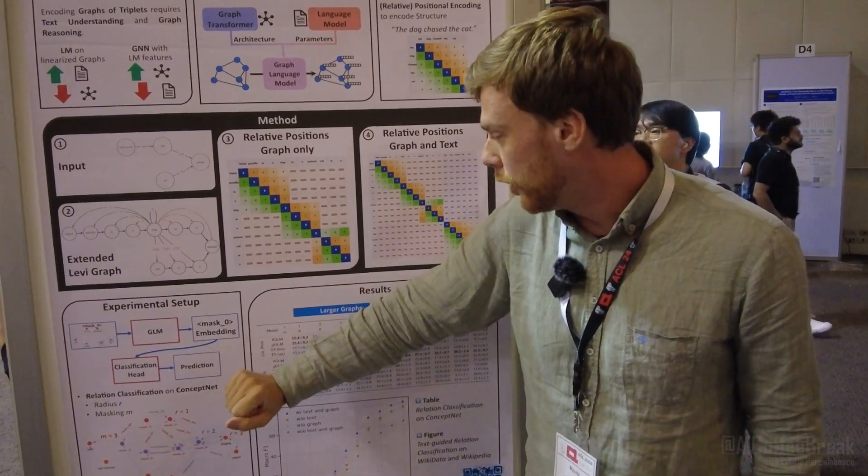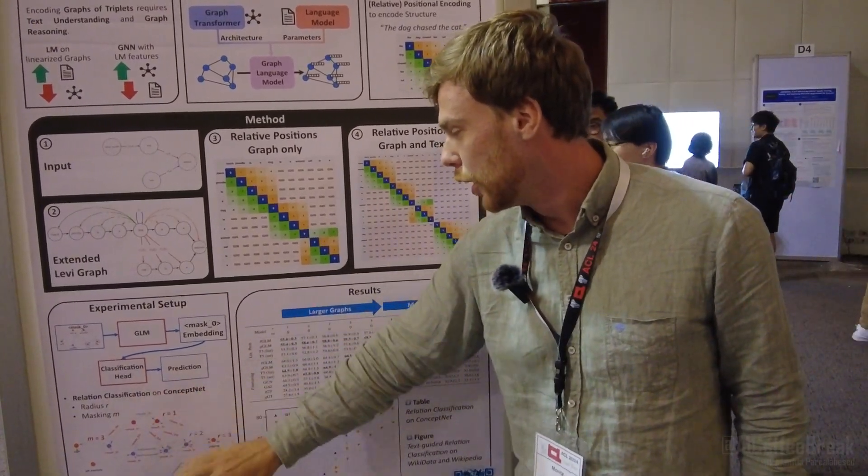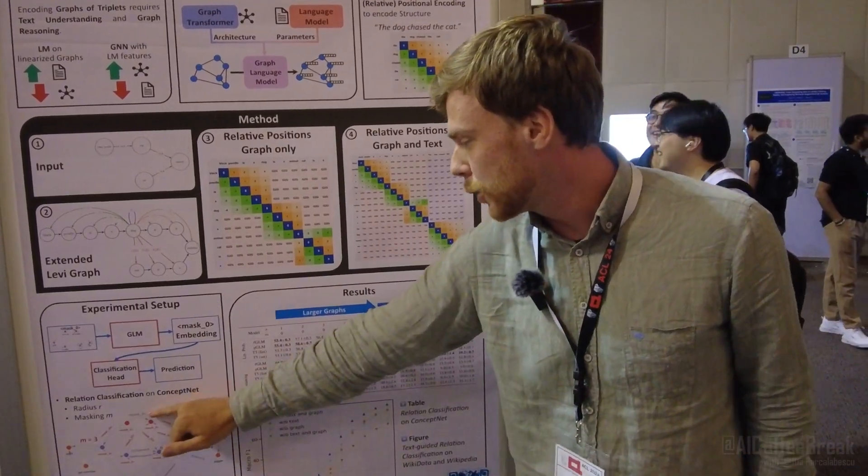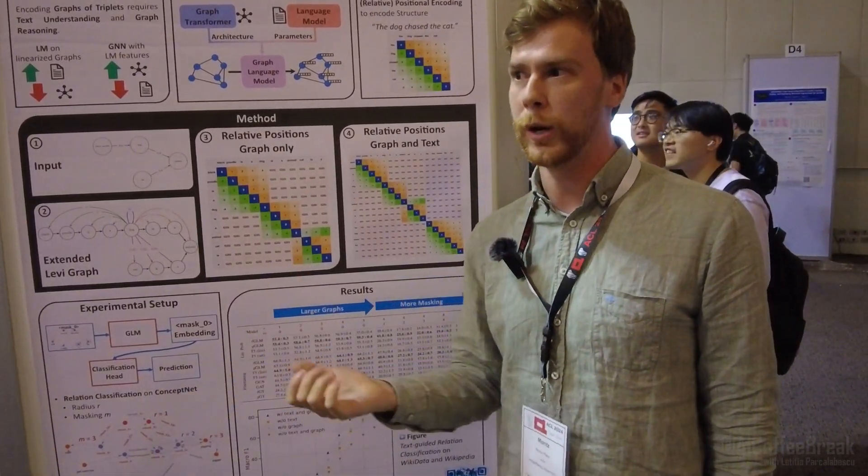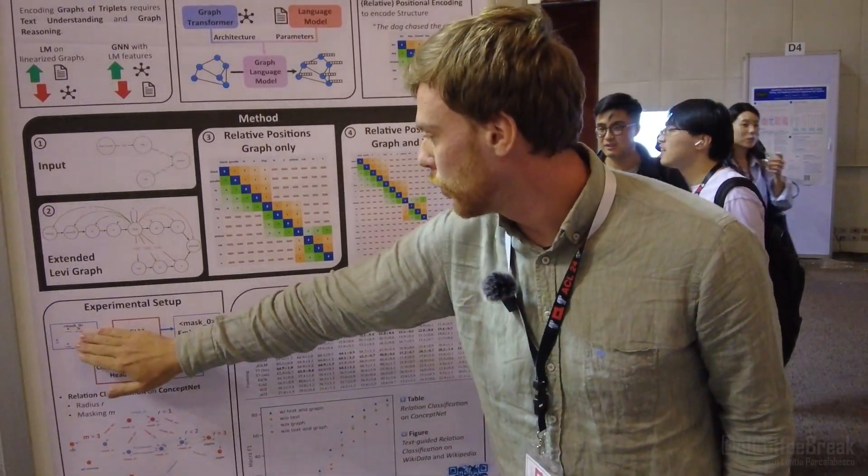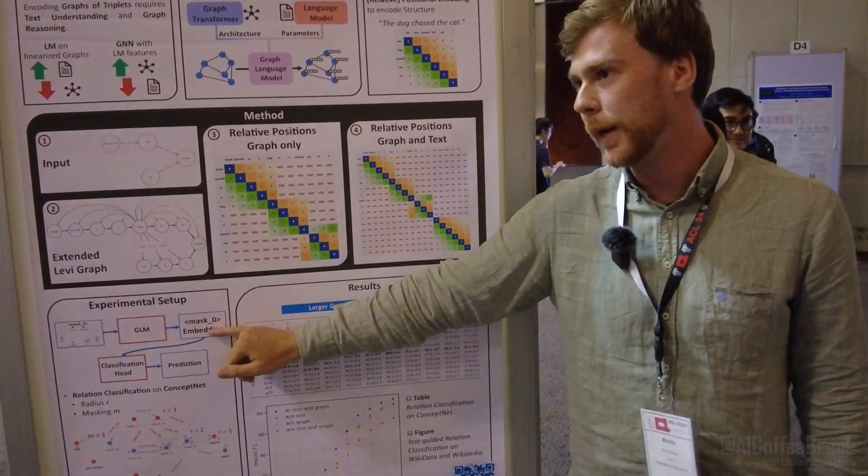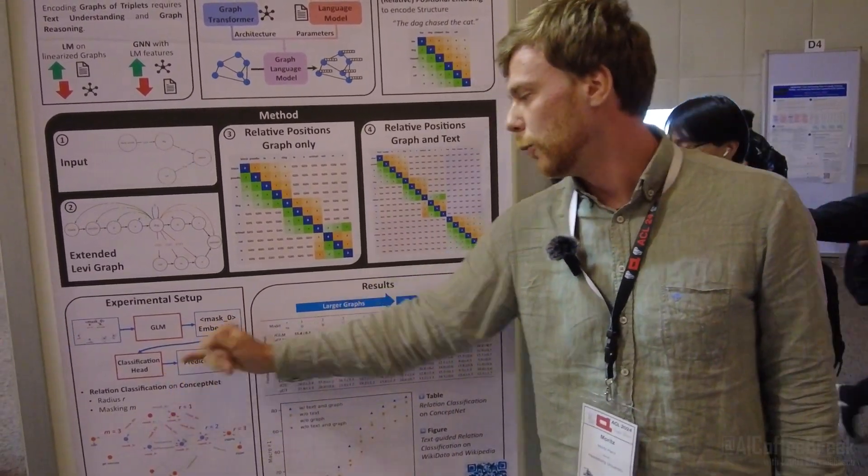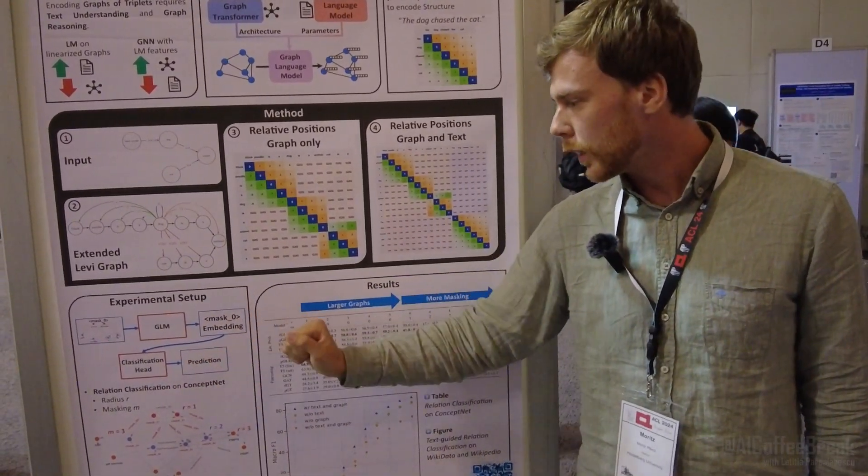We evaluate that on the task of relation classification. We take a connected subgraph like this, replace a relation with a mask, and then the task is to predict the correct relation. We take the graph, encode it, take the embedding of this mask token, and then train a classification head on top of that which gives us the final prediction.